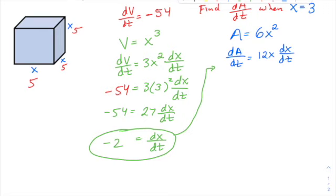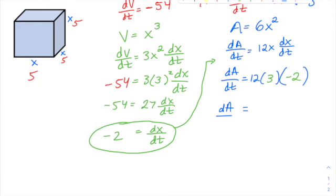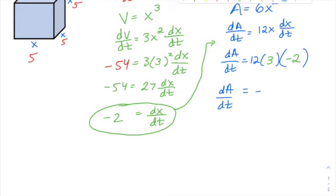Since we're talking about that same moment when x is 3, I can use that value right here. So dA/dt, the rate of change of the surface area, is 12 times x - at this moment x is 3 - and dx/dt at the same moment when x is 3 is negative 2. Now I've plugged in all quantities, just a little multiplication. dA/dt: 12 times 3 is 36, 36 times negative 2 is negative 72.